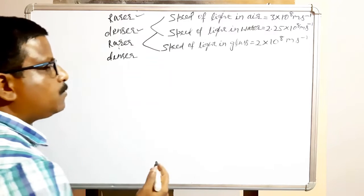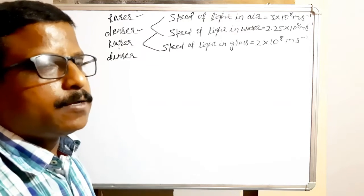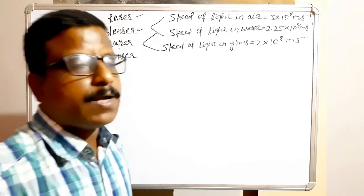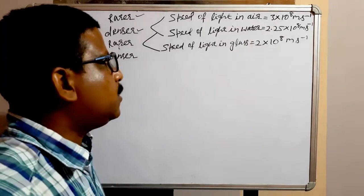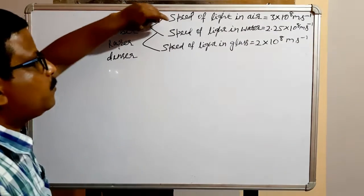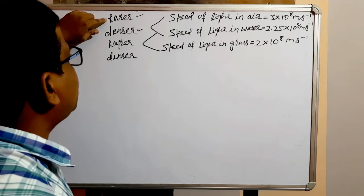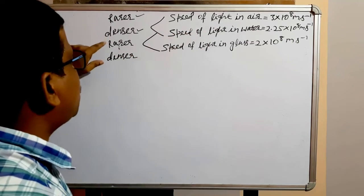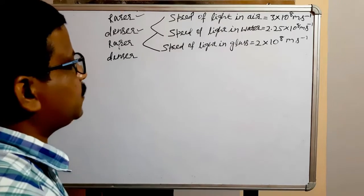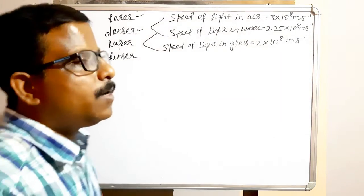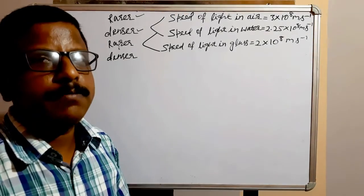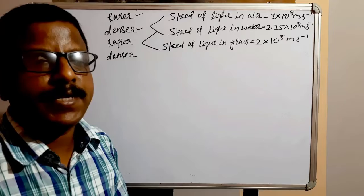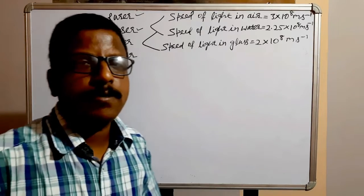We cannot say one medium is particularly rarer or denser on its own. When we compare two mediums, then we can say one is rarer and one is denser. When comparing air and water: air is rarer and water is denser. When comparing water and glass: water is rarer and glass is denser. Remember: in the rarer medium the speed of light is more, and in the denser medium the speed of light is less compared to the rarer medium.